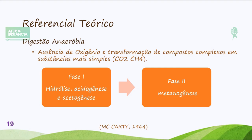Seriam dois produtos básicos: o meu biogás, composto basicamente por carbono e metano, e o meu biofertilizante, que vai ser um composto, uma sopa de nutrientes que podem ser utilizadas para a fertilização de plantas. Esse processo é dividido em duas fases básicas. A primeira com a hidrólise, acidogênese e acetogênese. Inicialmente, a matéria orgânica vai passar por essas transformações.